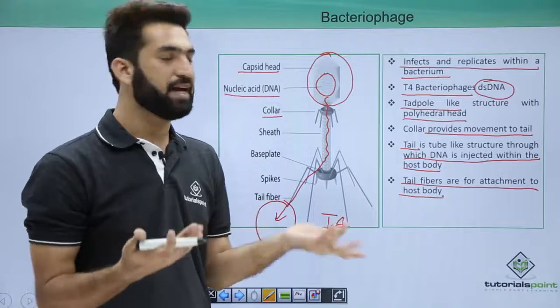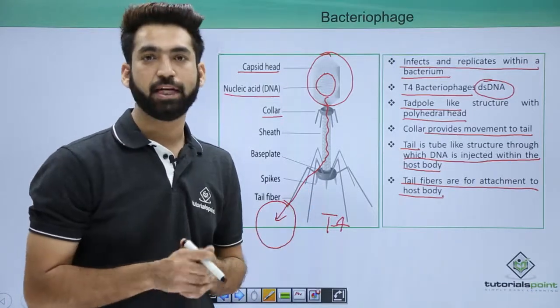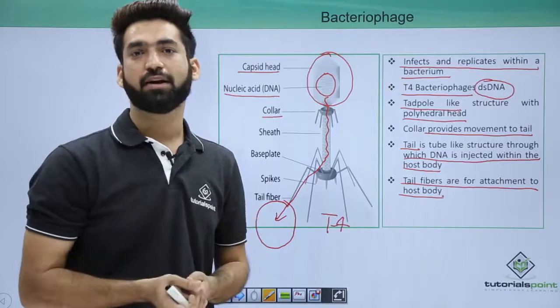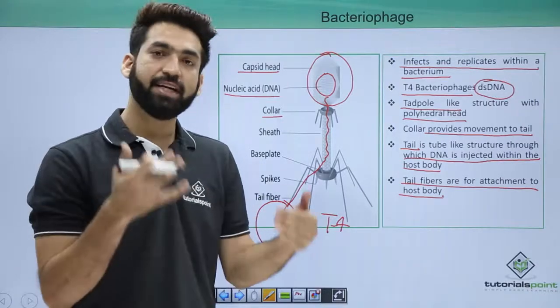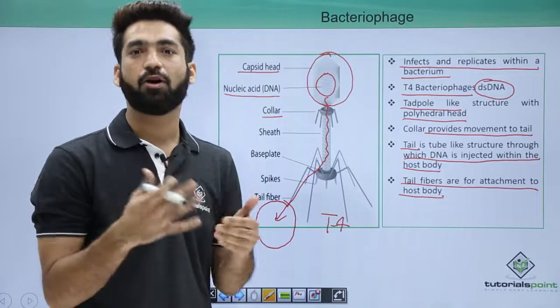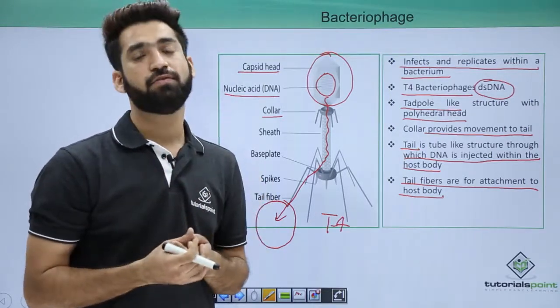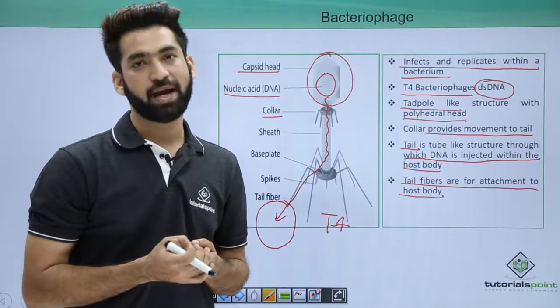Your bacterial phages can be many types. What I have drawn is T4 bacterial phage. Bacteriophages which infect E. coli especially are called coliphages. Bacteriophages which infect cyanobacteria are called cyanophages. There are viruses which also infect fungus; those are called mycophages.